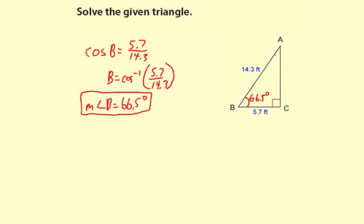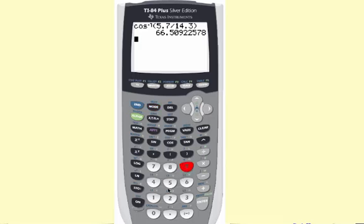Now I can easily solve for this angle A using the triangle sum theorem. And since I already have a right angle, I know that's 90 degrees. So I can really just say measure of angle A equals 90 degrees minus the measure of angle B, which is 66.5 degrees. So that's 23.5 degrees.